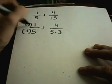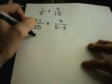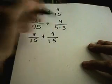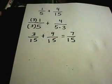Again, that means I have to multiply top and bottom of the left term by 3. And again, I'll get 3 over 15 plus 4 over 15, which is 7 over 15 as we found before.